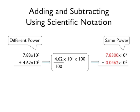Now that the exponents are the same, you can add 7.83 to 0.0462. You get 7.8762. Since they both have the same exponent, you can continue to use the 10 to the 5th.